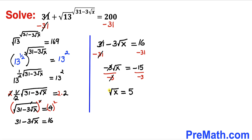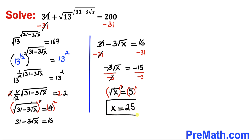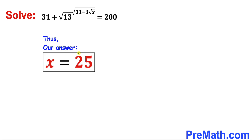Now let me undo this square root by squaring both sides. The square and square root cancel, so x equals 25. That is our solution — x equals 25 is our final answer.